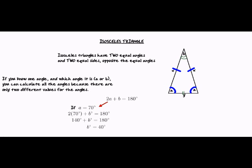Now let's say we know that angle B is 30 degrees. So we have 2A plus 30 equals 180 degrees. We subtract 30 from both sides to get that 2A is 150. Then we divide each side by 2 to get that angle A is 75 degrees.